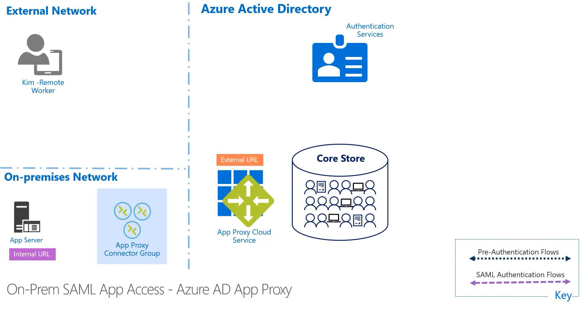Hey everyone, I am here with Ramiro again to cover some Azure AD App Proxy videos. If you haven't watched it already, please go and watch the App Proxy Fundamentals video where Ramiro walks you through the components. In this video, we're going to cover an on-premises application that uses SAML for authentication. To set the stage, we have Kim who will access Tableau Server. It sits on the corp network and uses SAML authentication. Tableau Server has already been onboarded with Azure AD App Proxy for pre-authentication. Ramiro, do you want to give a quick summary about pre-authentication?